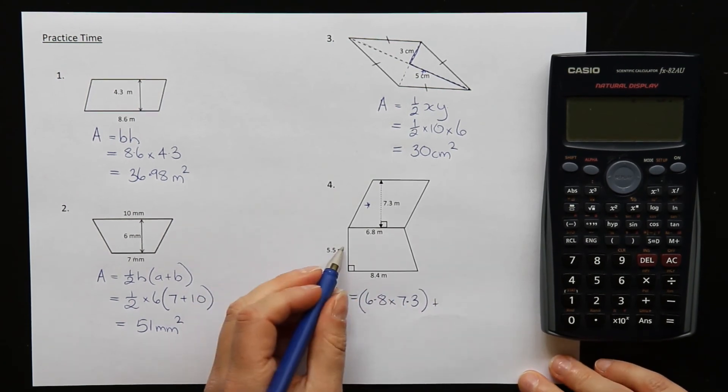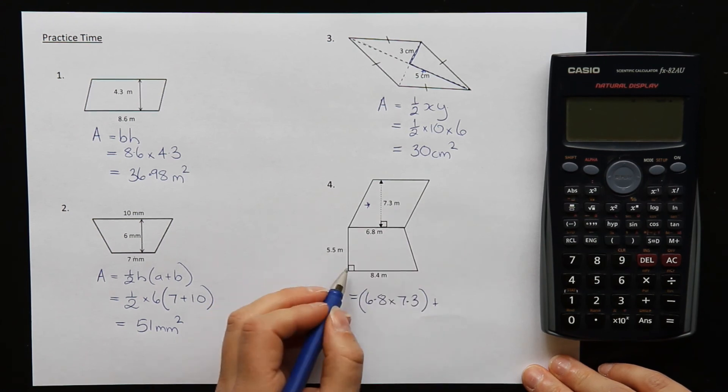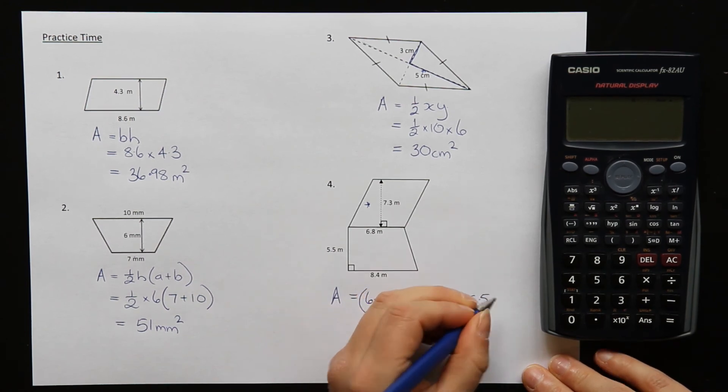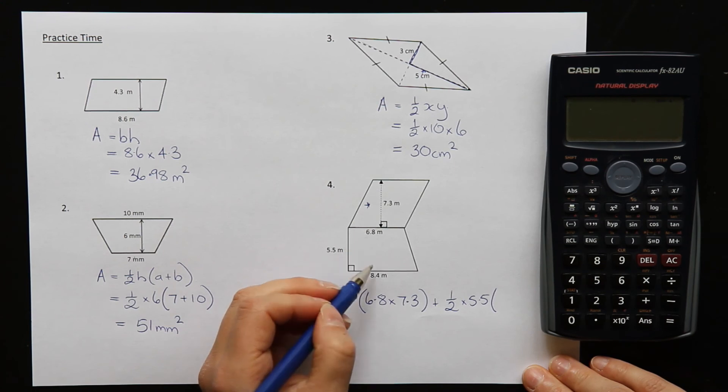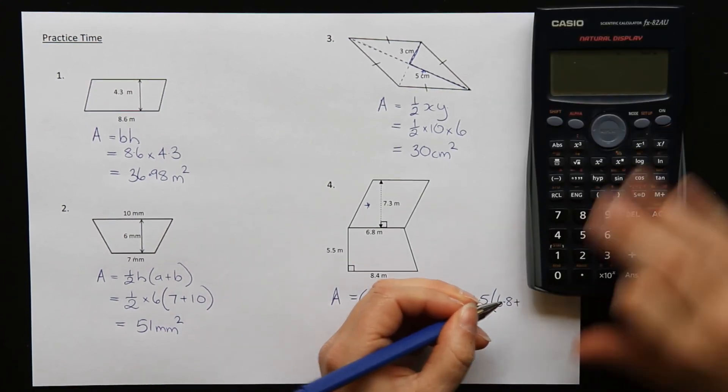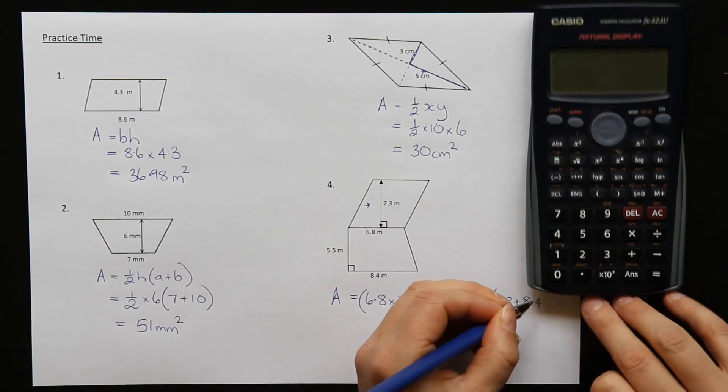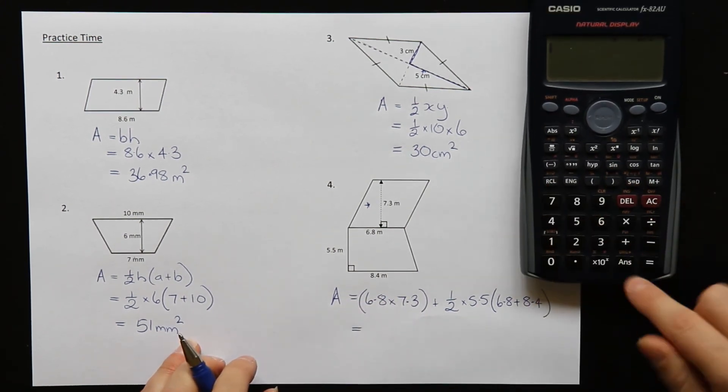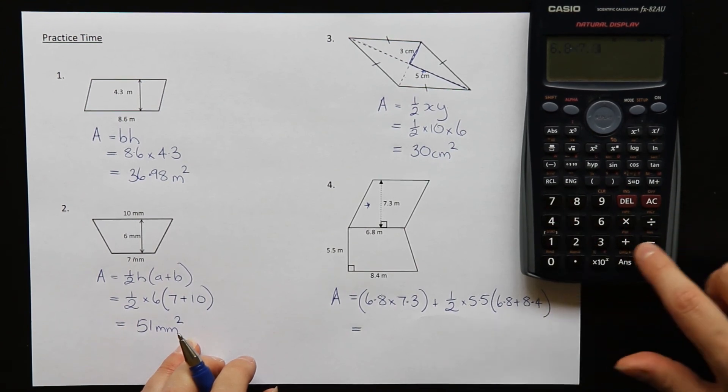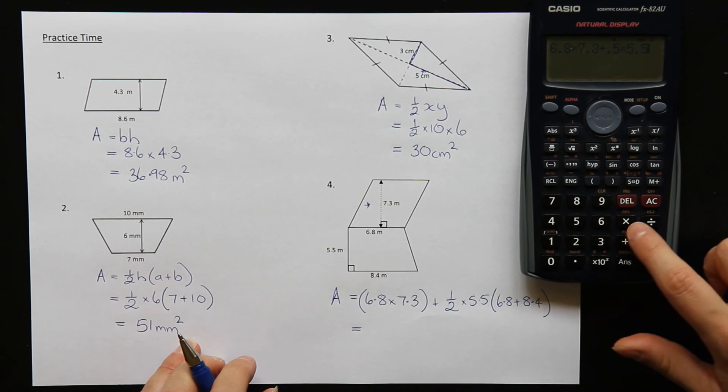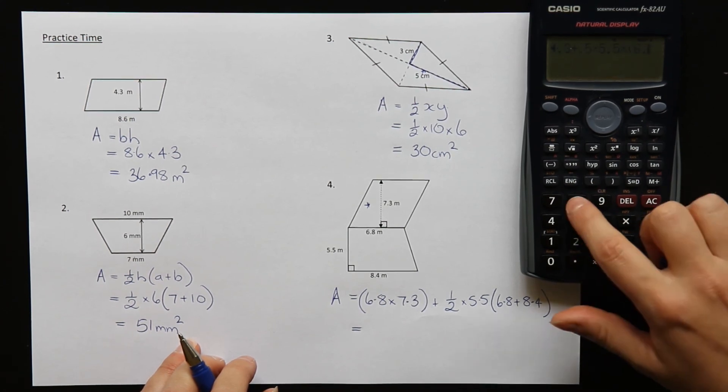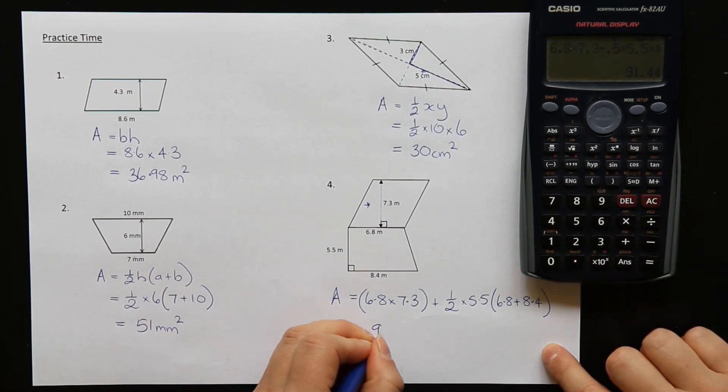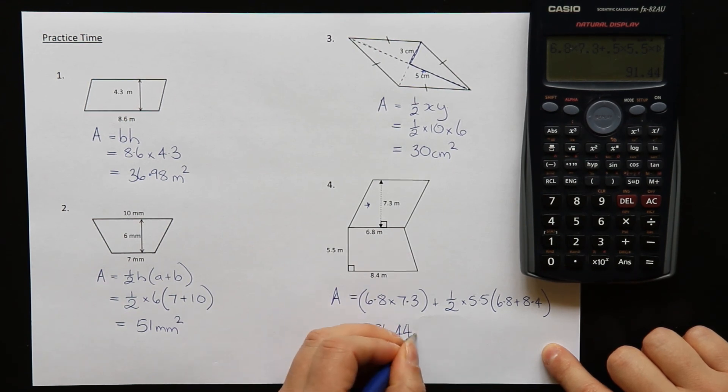Then we have a trapezium, which is half the height. The height is 5.5, and then we have brackets, the A plus B, which is these two sides here, 6.8 plus 8.4. Equals, let's type that in. 6.8 times 7.3 plus half of 5.5 times 8.6 plus 8.4. We get 91.44 meters squared.